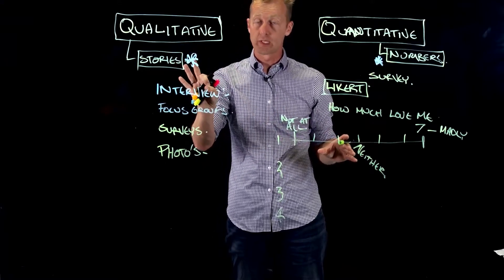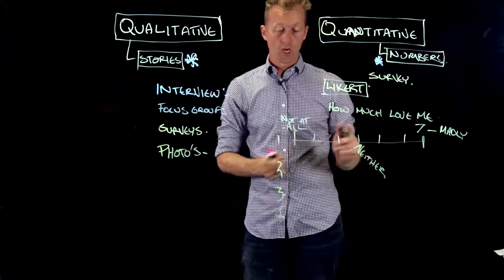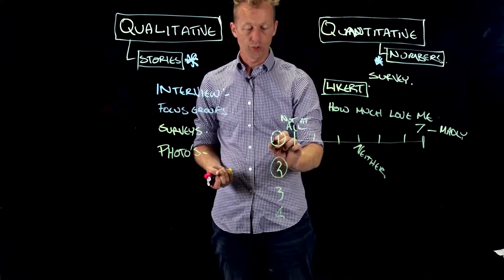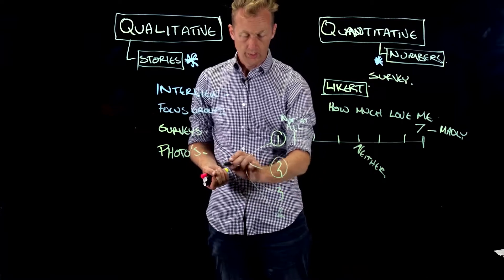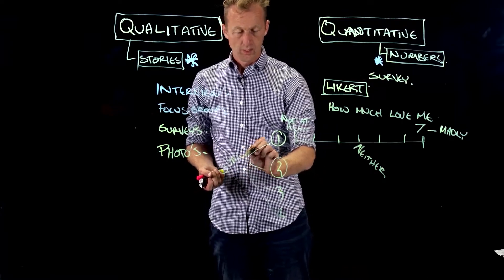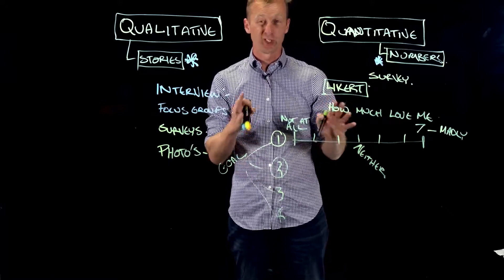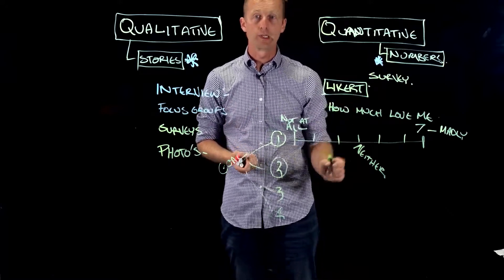So, Likert scales are really useful for capturing that information really quickly. They don't give you the depth of this, but they do give you the richness. Now, what I would say is that when you're creating your questions, you need to make sure that they all relate to your goal. And creating these can be a little bit tricky, as in researchers find it a little bit tricky. So, keep it really simple.